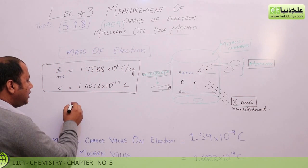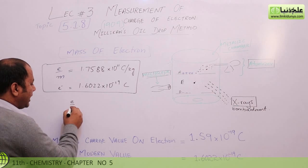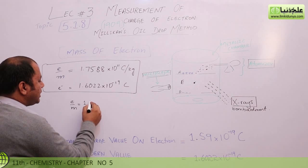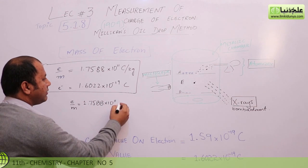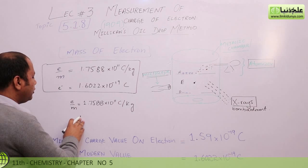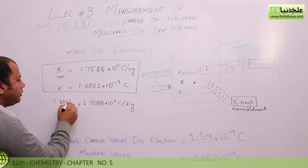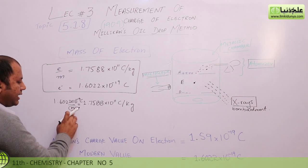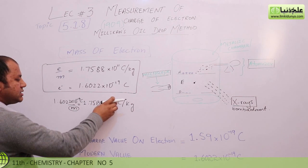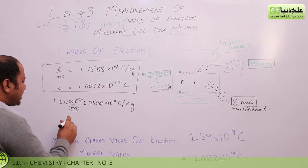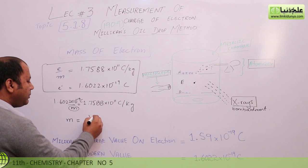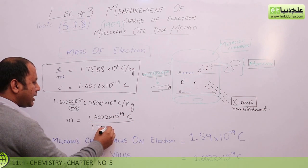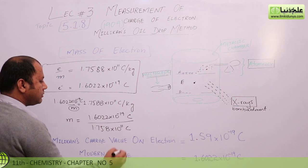And from Millikan's experiment, the charge on one electron is approximately equal to 1.6022 × 10⁻¹⁹ coulomb. If we compare both values: E/M = 1.7588 × 10¹¹ coulomb per kg, and if we place the value of charge — 1.6022 × 10⁻¹⁹ coulomb — we can cross multiply and bring M to the right side.